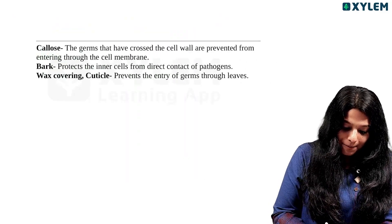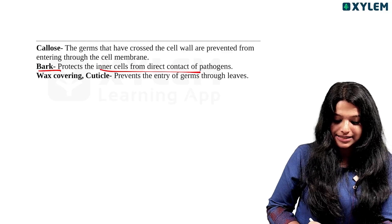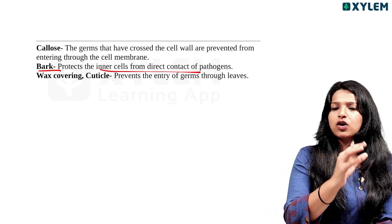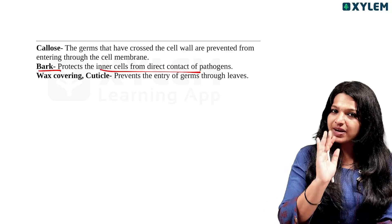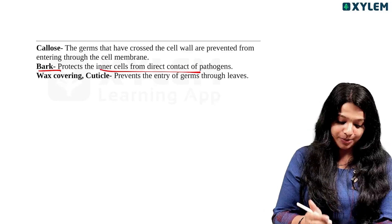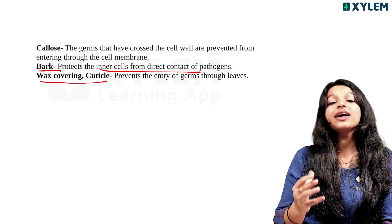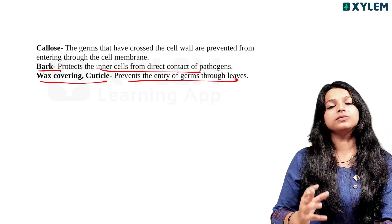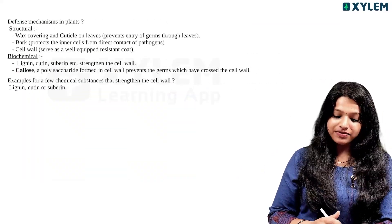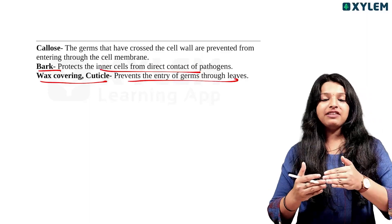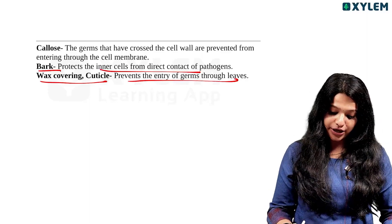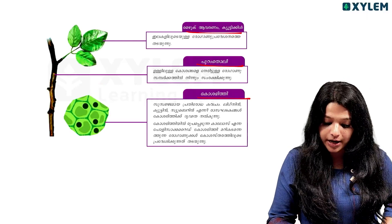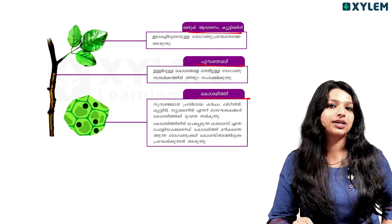We are talking about bark — it protects the inner cells from direct contact with the pathogen. The pathogen is in direct contact with the cell, and bark is what protects them. The next thing is wax covering cuticle — it prevents the entry of germs through the leaves.